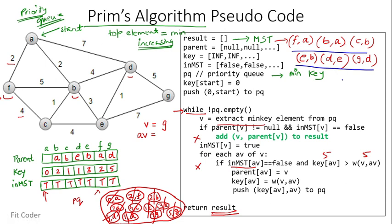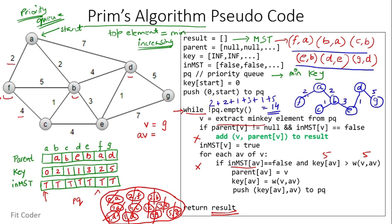The minimum spanning tree has edges: F-A, B-A, C-B, E-B, D-E, and G-D. Regarding time complexity, it is O(E log V), because in the priority queue we can have a maximum of E entries for all the edges, making the time complexity O(E log V).